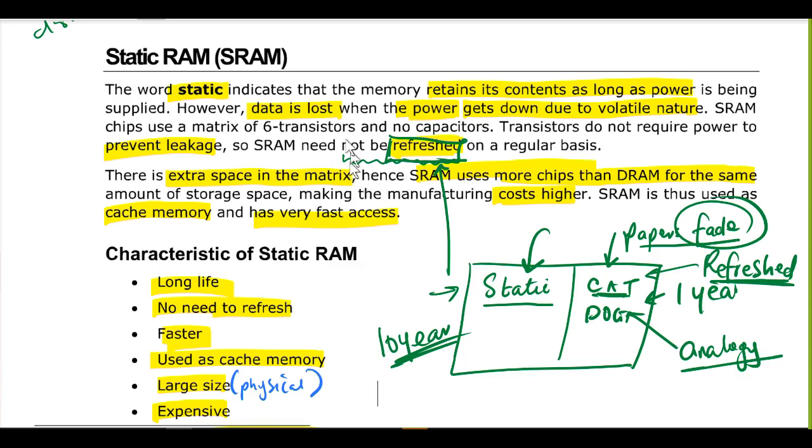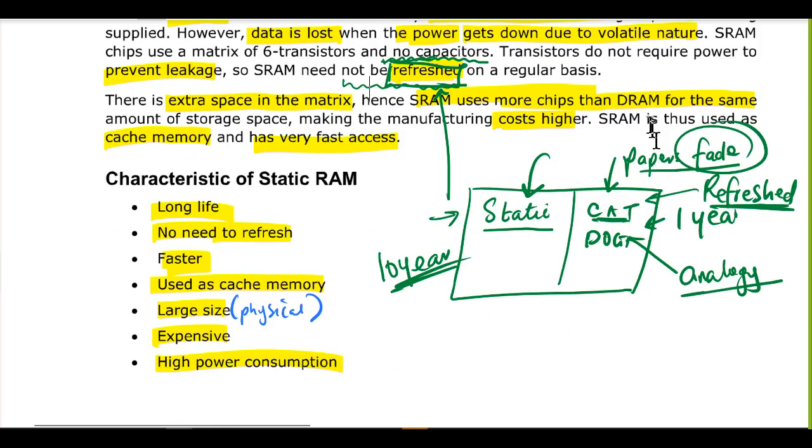One of them does not use capacitor. And capacitors are the one that allows you to store or refresh. But on the other hand, when they're not going to be refreshed, then they will still have data that are stored even earlier. So we are saying that SRAM uses more chips than dynamic RAM for the same amount of storage space, making them quite expensive in comparison to the dynamic RAM.